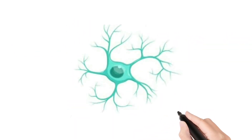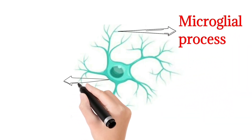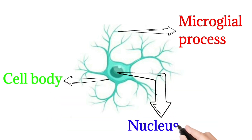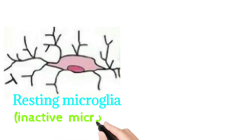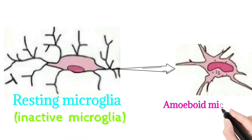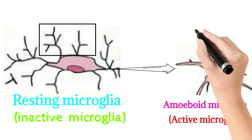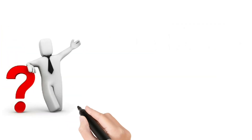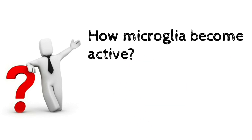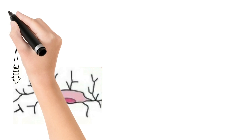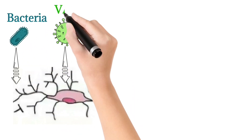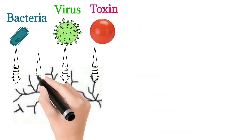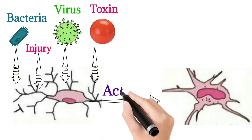The structure of microglia includes microglial processes, a nucleus, and cell bodies. Resting microglia is also called inactive microglia. Under pathological conditions, inactive microglia convert into activated microglia, which is the amoeboid form. Resting microglia have long branches, while activated microglia have short branches. Microglia become activated during pathological conditions such as bacterial or viral infections, toxins, or brain injury.